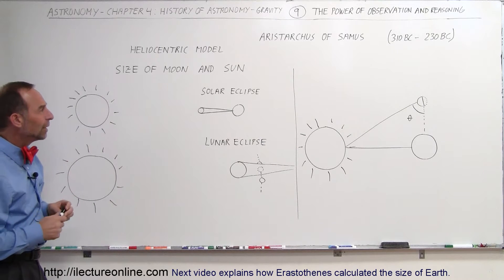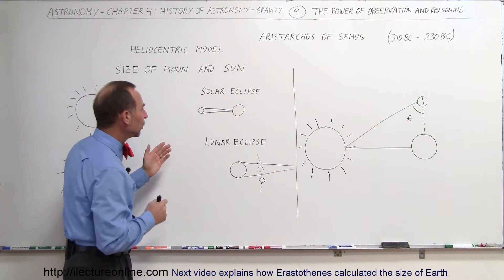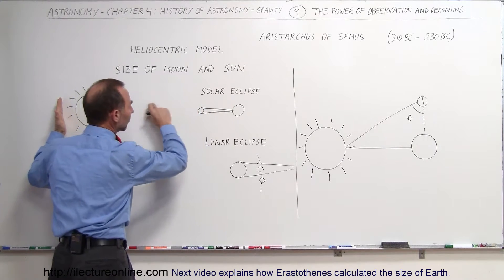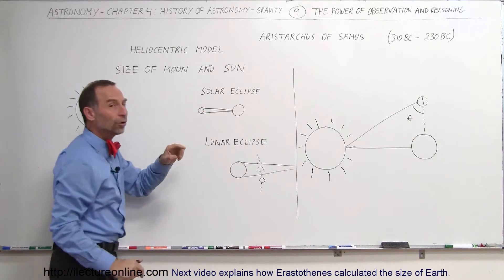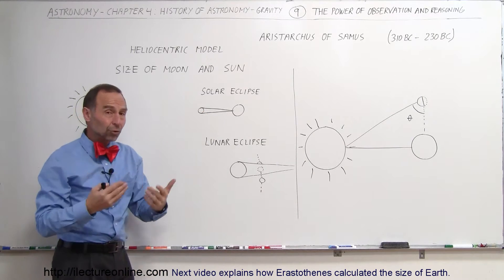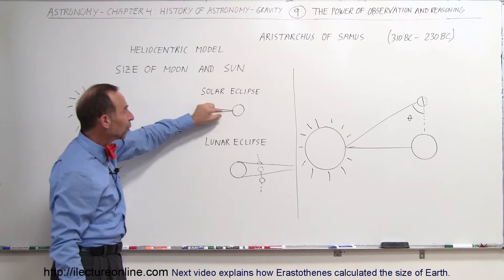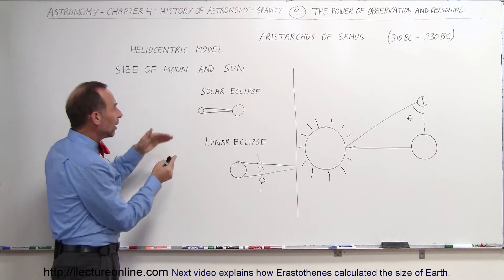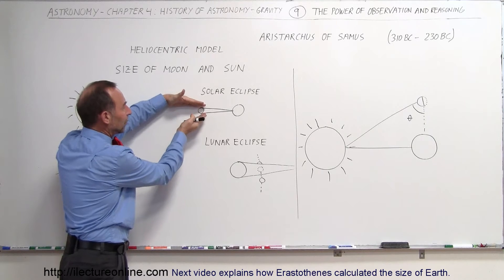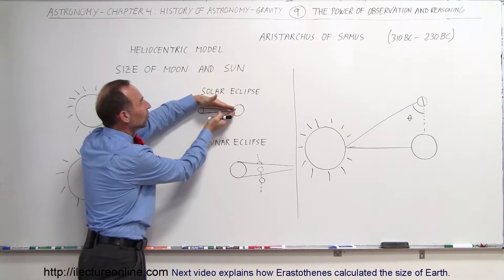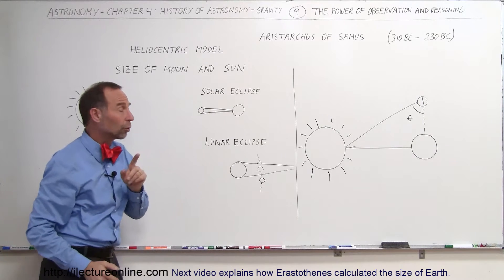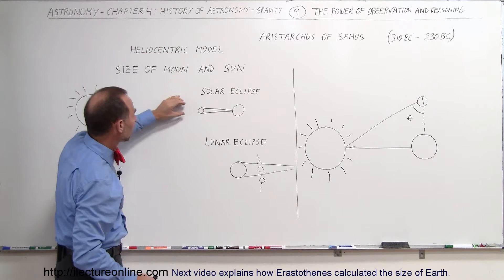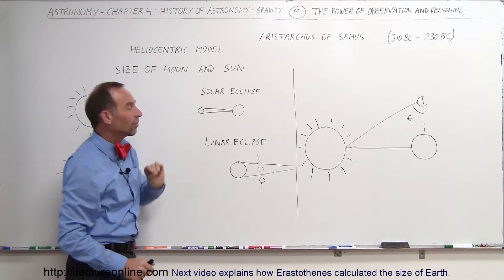So what he did was he went ahead and observed that during a solar eclipse, the Sun is right here and the Moon gets in the way and blocks out some of the light that otherwise would reach the Earth. He realized by observing and by talking to people that the shadow formed on the Earth during the solar eclipse was relatively small. In other words, the shadow that the Moon created would taper down to almost zero width by the time it reached the Earth. He figured that the light from the Sun would be geometrically tapered like a triangle down to there.